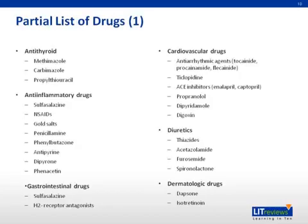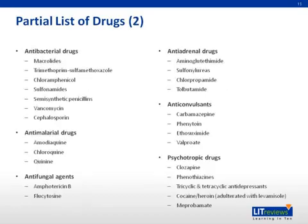There is a very long list of drugs that can cause neutropenia, so I'm not going to spend time going over each one. But I do want to point out a few common drugs that we all use, such as NSAIDs, H2 blockers, diuretics, penicillins and other antibiotics, and many psychotropic drugs.